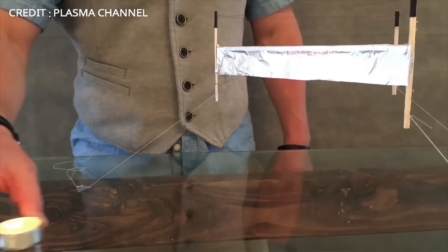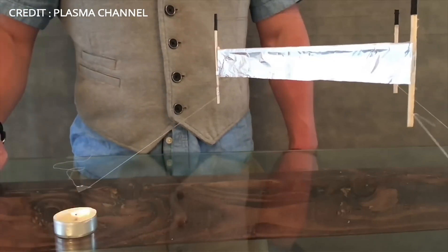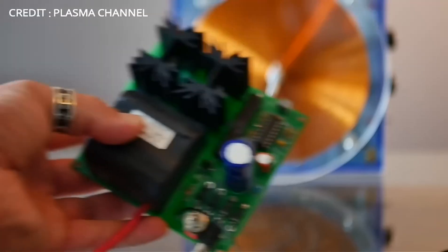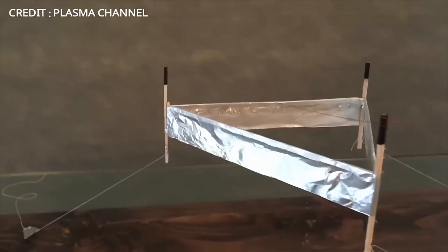Plasma Channel. This channel also proved that the ion propulsion is possible by building an ion lifter from metal foil and a small copper wire.